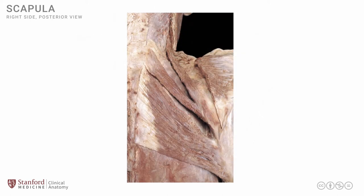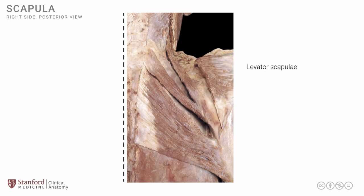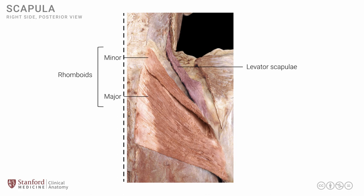Let's look at a dissection photograph of this region, again viewing the right side, with the trapezius removed to expose the three deeper muscles. The levator scapulae is seen extending from the superior medial angle of the scapula up to the upper cervical region. The rhomboid minor extends from the midline going inferiorly and laterally to the medial border of the scapula. The rhomboid major, which is much larger, lies inferior to the minor and also extends from the midline to the medial border of the scapula.